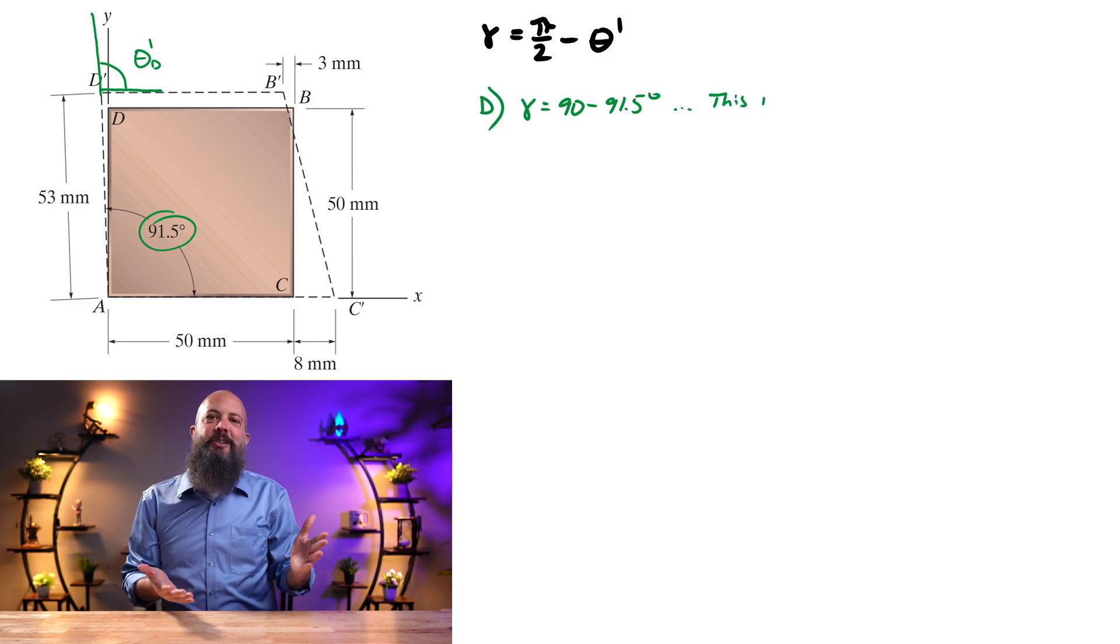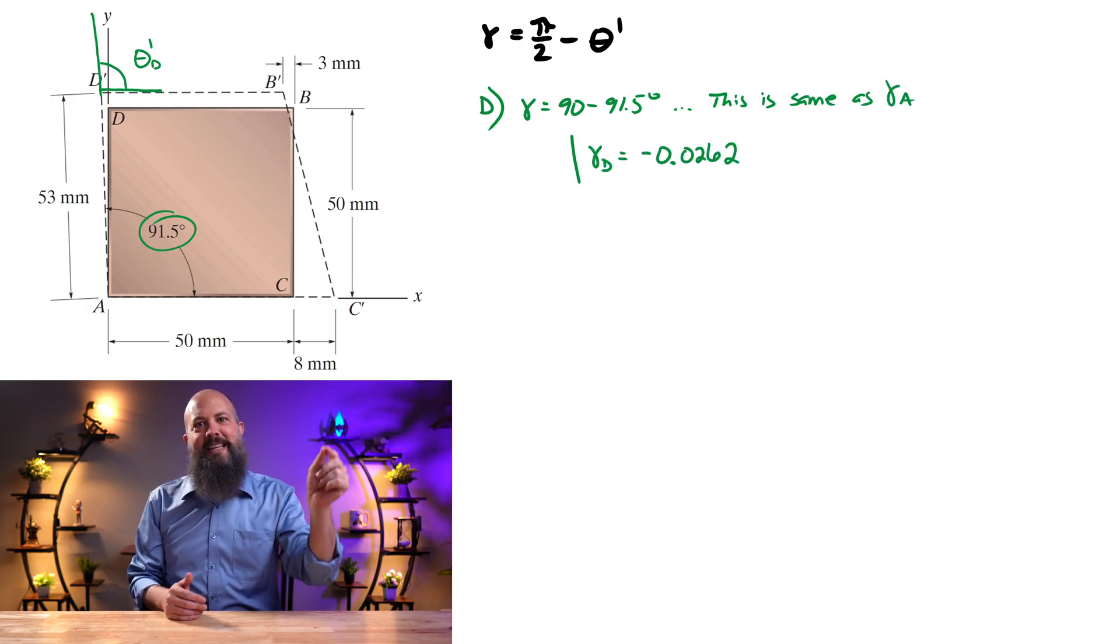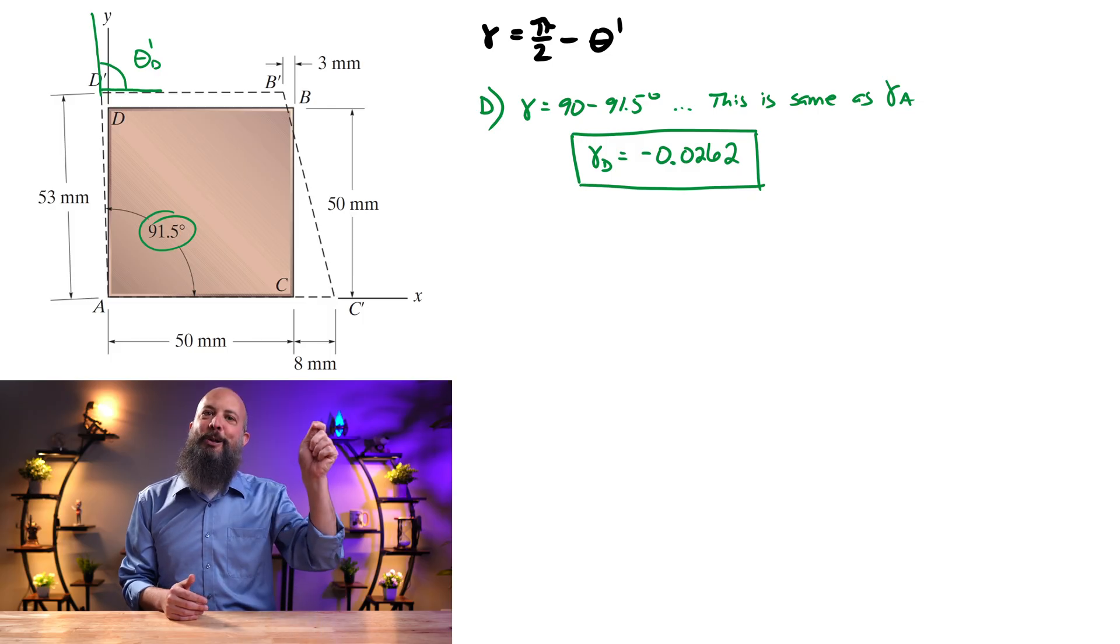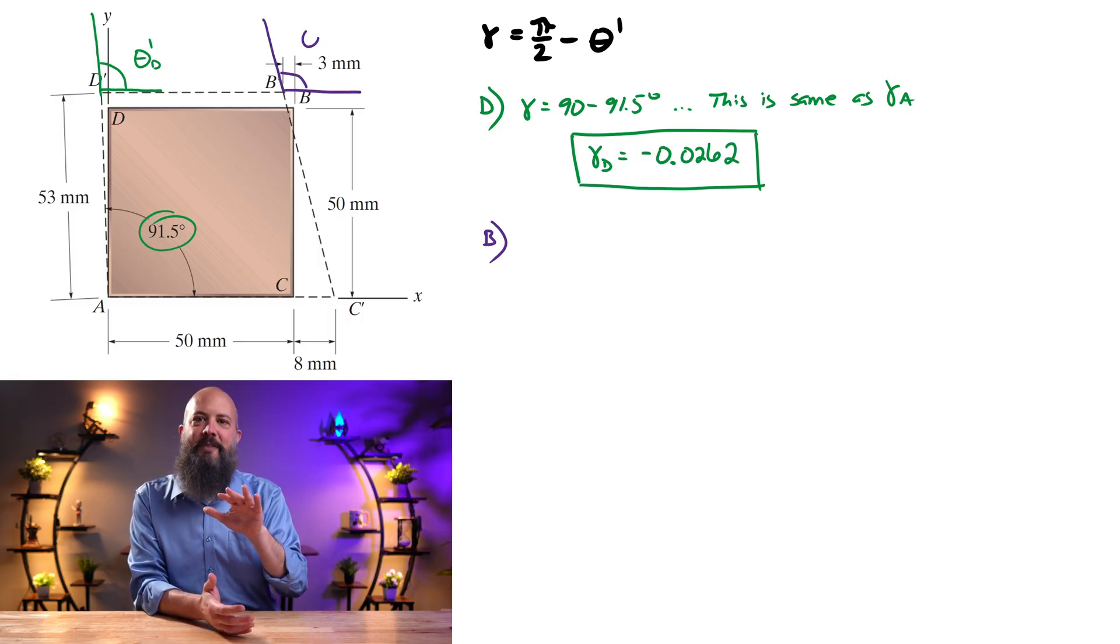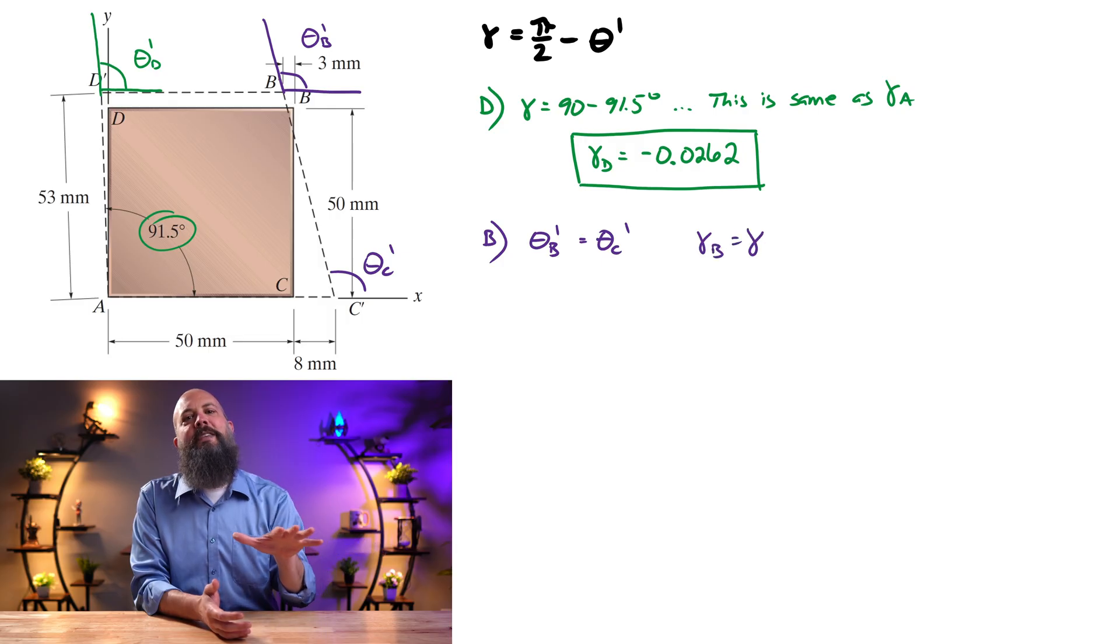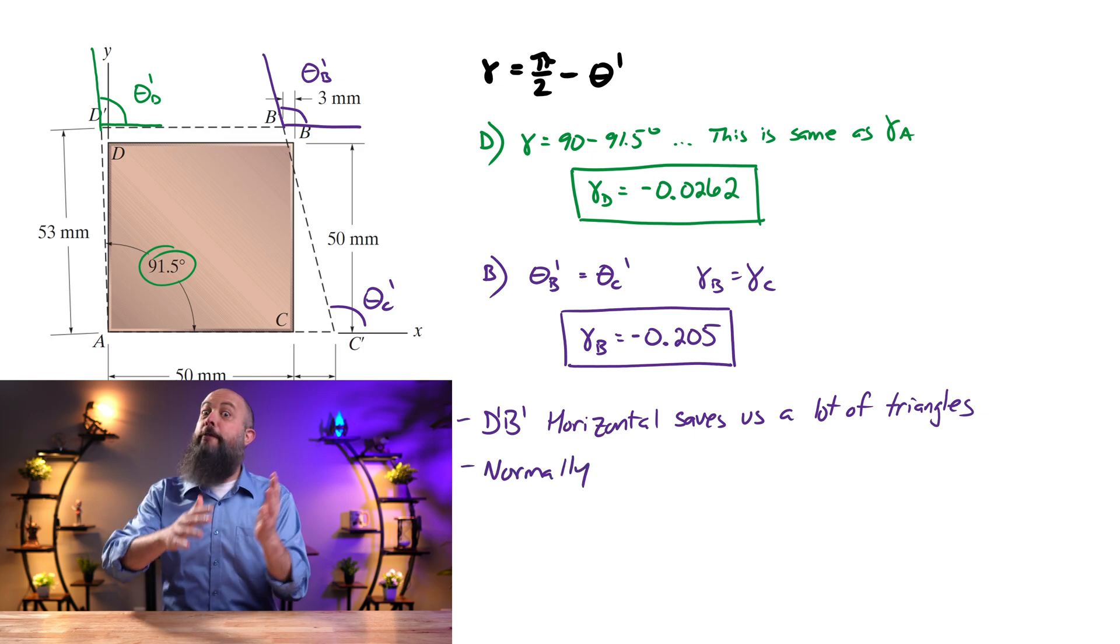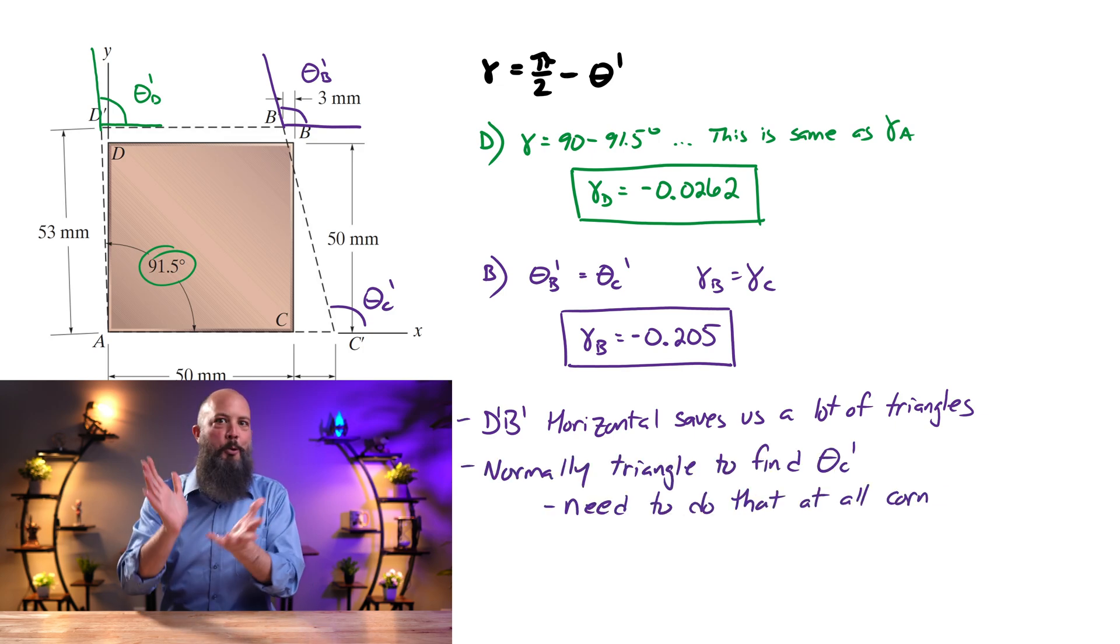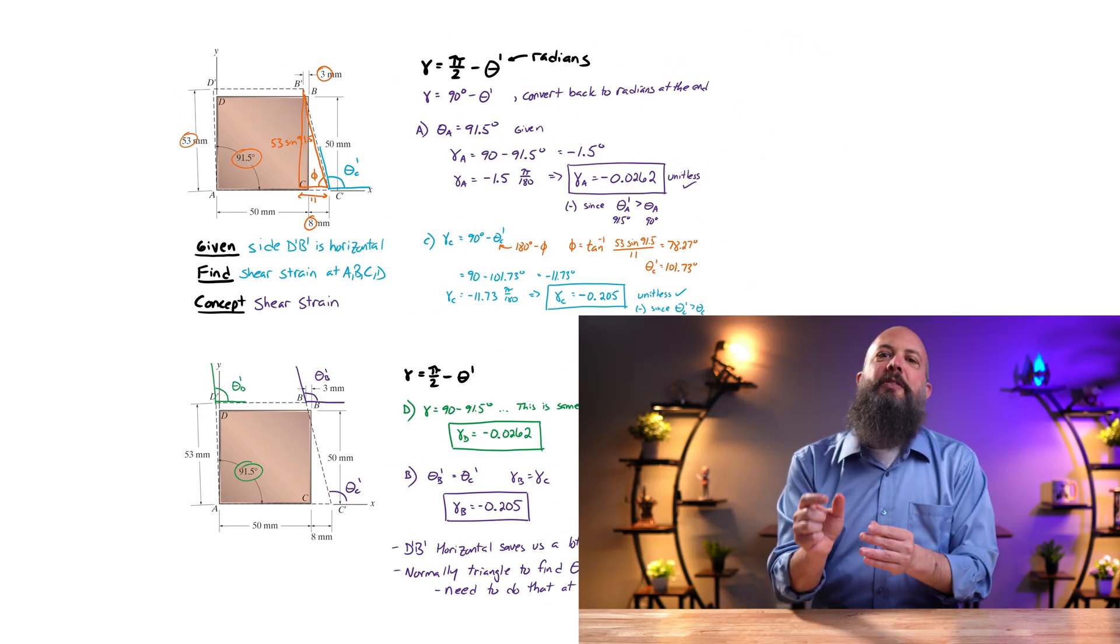So what this means is that actually the angle at B is going to be exactly the same as the angle down at C, and the angle at D is exactly the same as the angle down at A. So actually shear strain at D will be the same as the value we already found at A, and the shear strain at B will be exactly the same as the value we already found at C. Had that not been at an angle, then we would have had to draw a few more triangles and done more inverse tangents and inverse sines or Pythagorean theorems to solve for those angles.